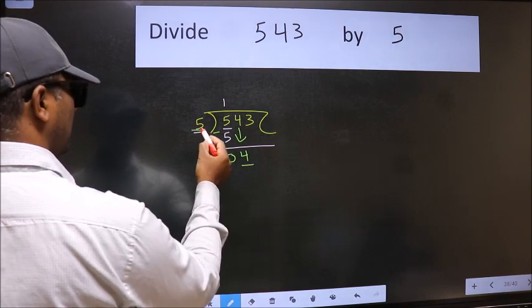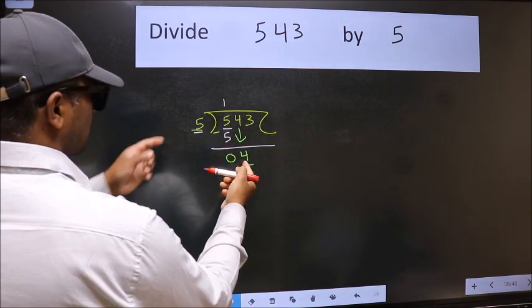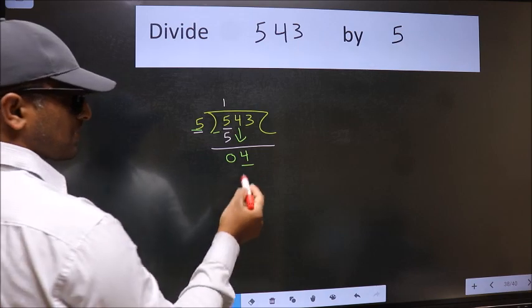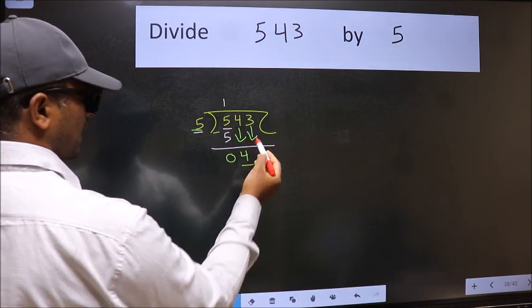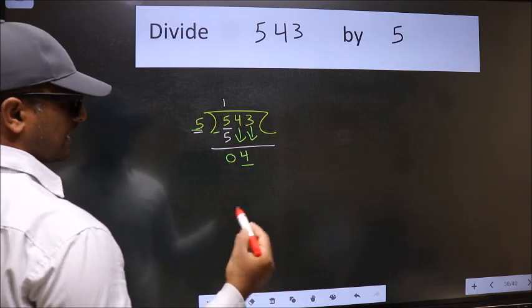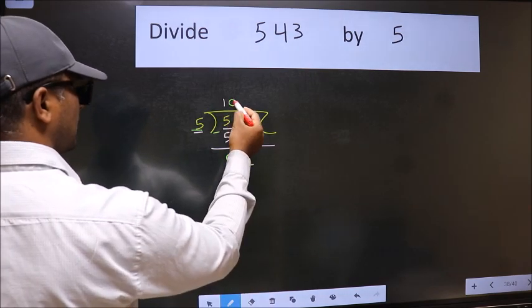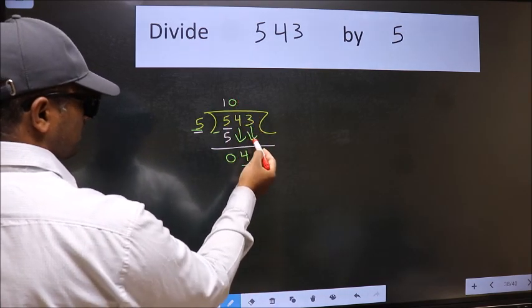Now here we have 4 and here 5. 4 is smaller than 5, so we should bring down the second number. And the rule to bring down the second number is we should put 0 here. Then only we can bring this number down.